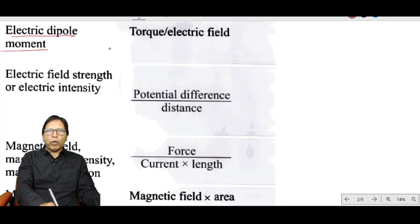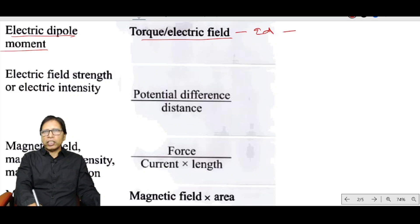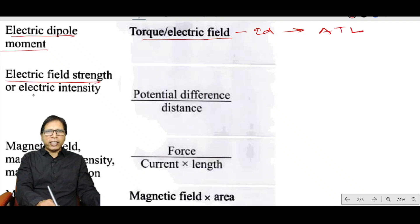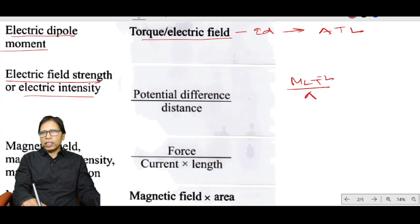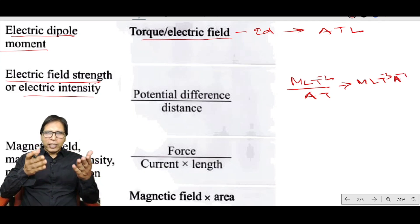Electric dipole moment equals charge × distance: AT × L = ATL. Electric field strength and electric intensity have the same dimension as electric field: force divided by charge gives MLT⁻³A⁻¹.